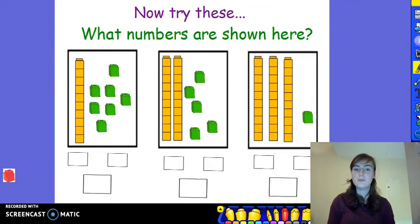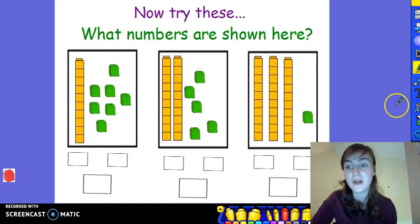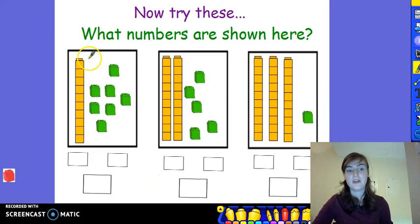Now I've got some more for you to try all by yourself. Pause the video and see if you can complete them. And when you are finished, come back and we will try them together. Well, let's see how you got on. In the first box, I can see 1 ten and 1, 2, 3, 4, 5, 6, 7 ones. I know that there are 17 cubes in box number 1.